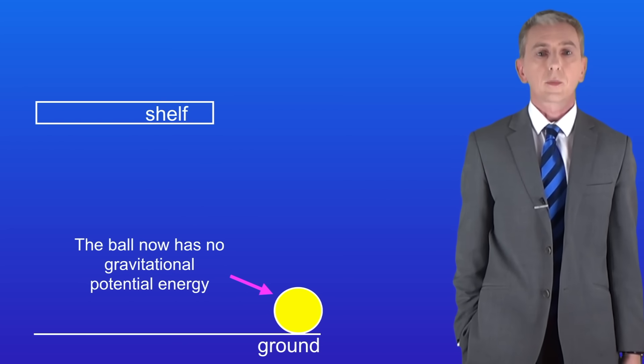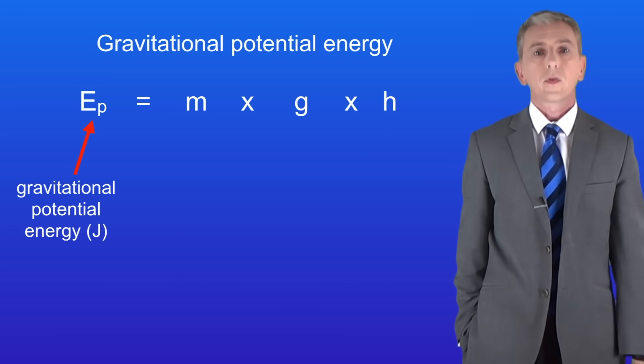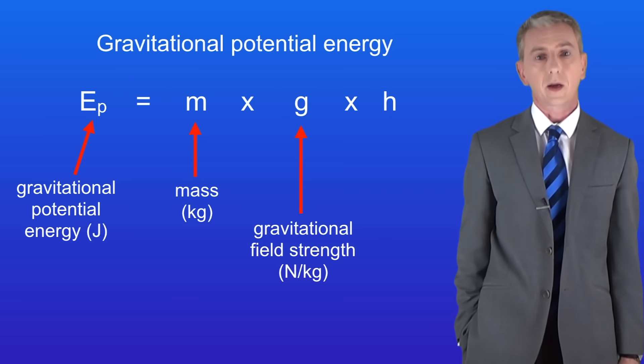We can calculate the gravitational potential energy of an object by using this equation. The gravitational potential energy in joules equals the mass in kilograms multiplied by the gravitational field strength multiplied by the height in meters.